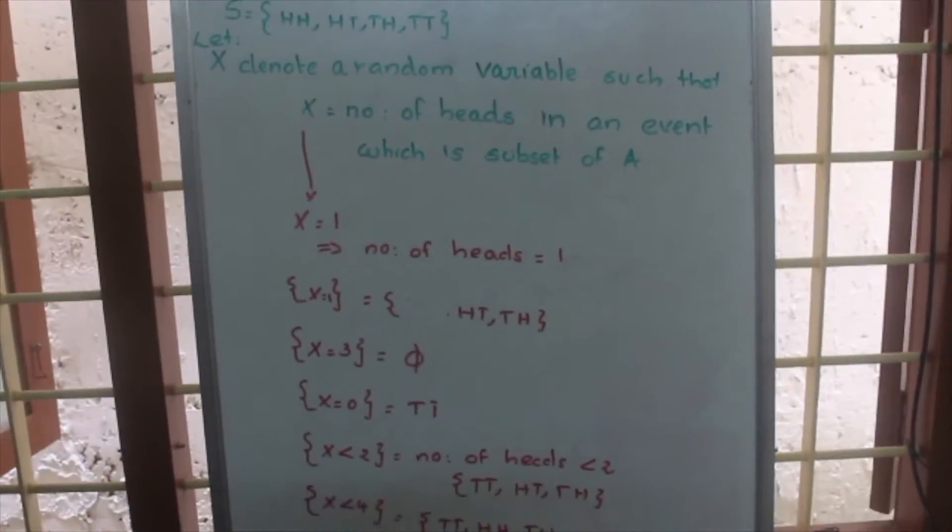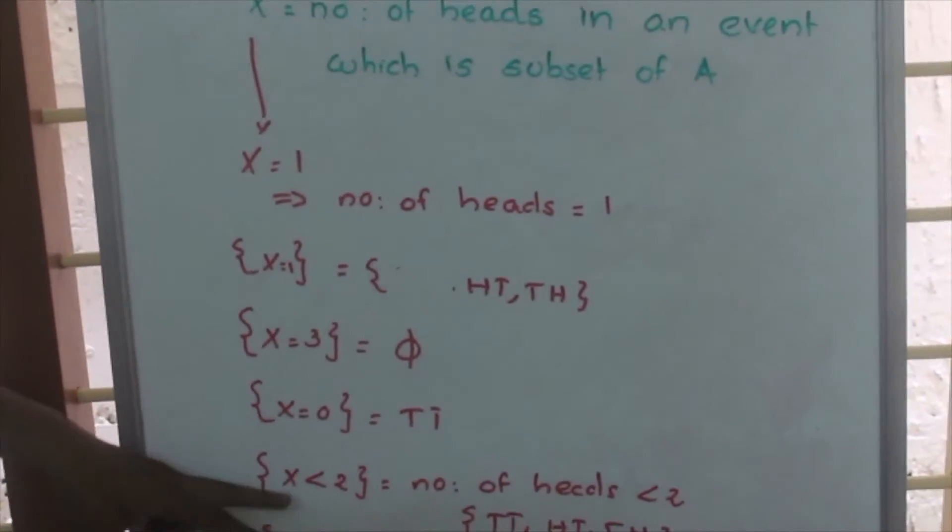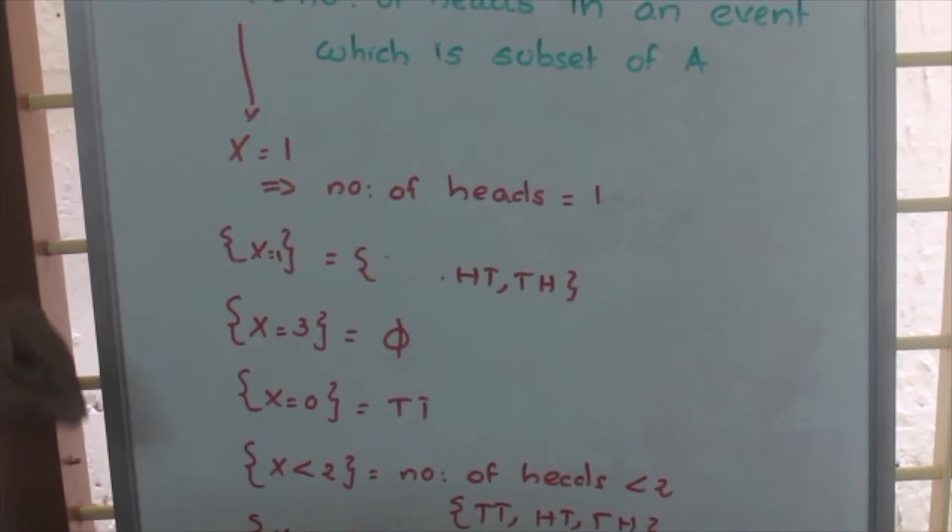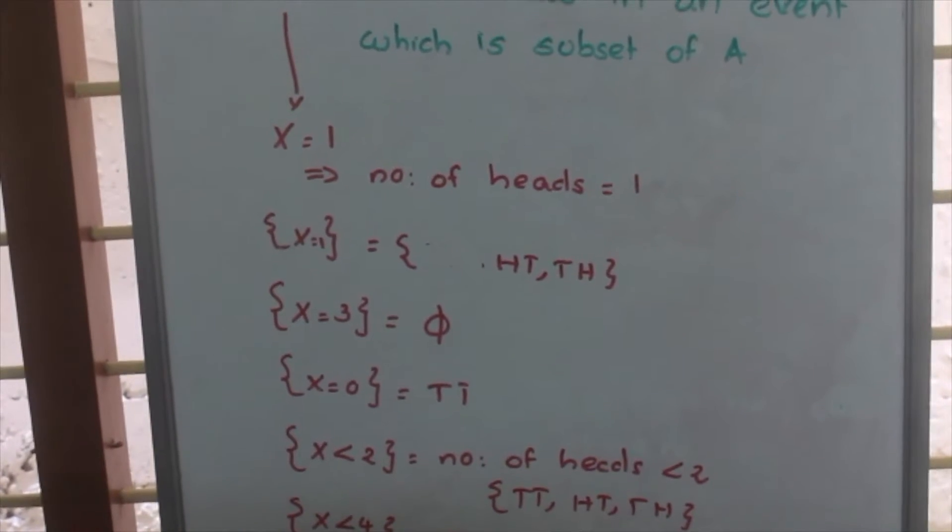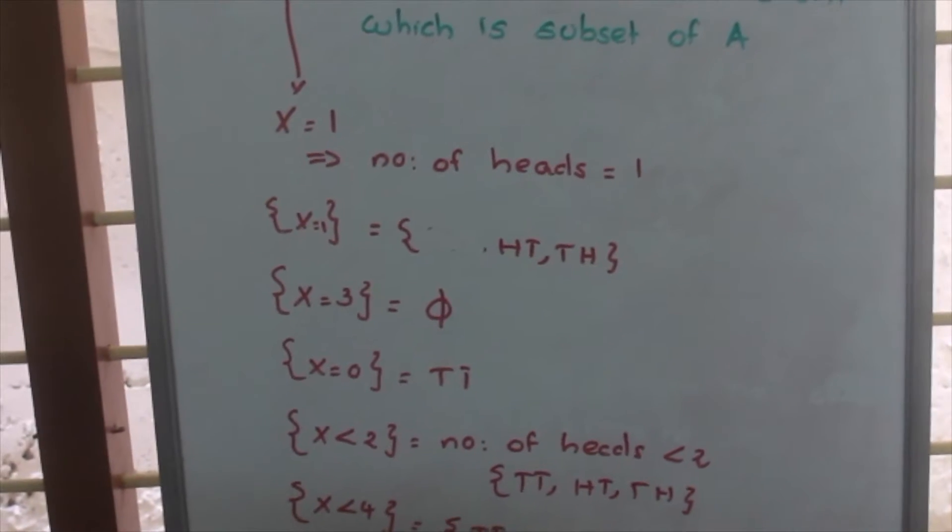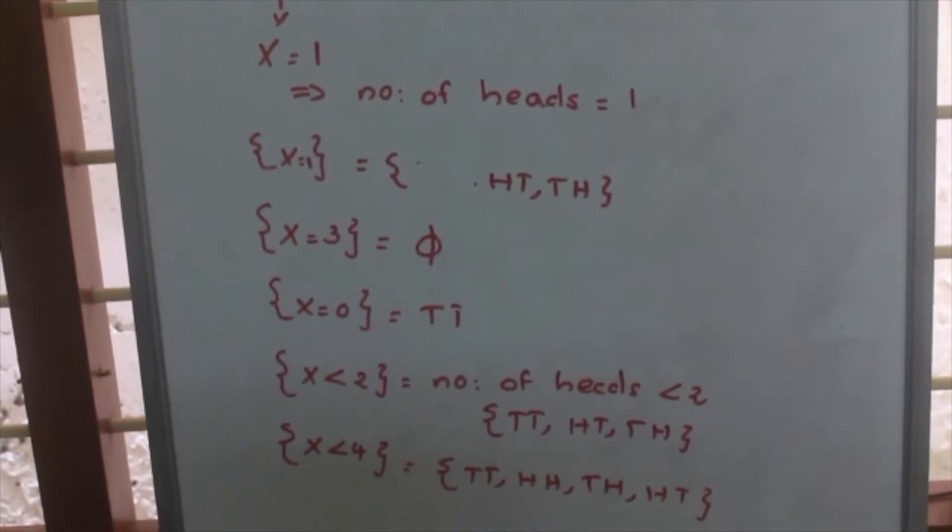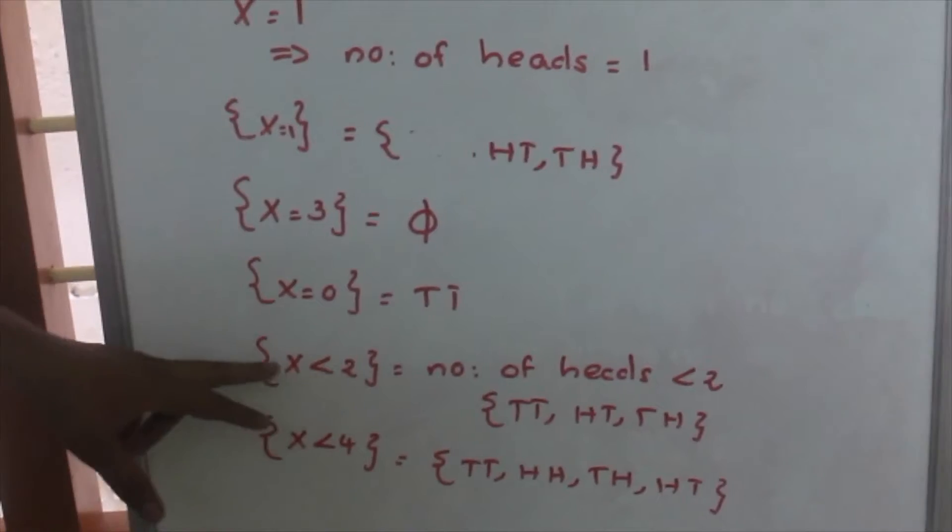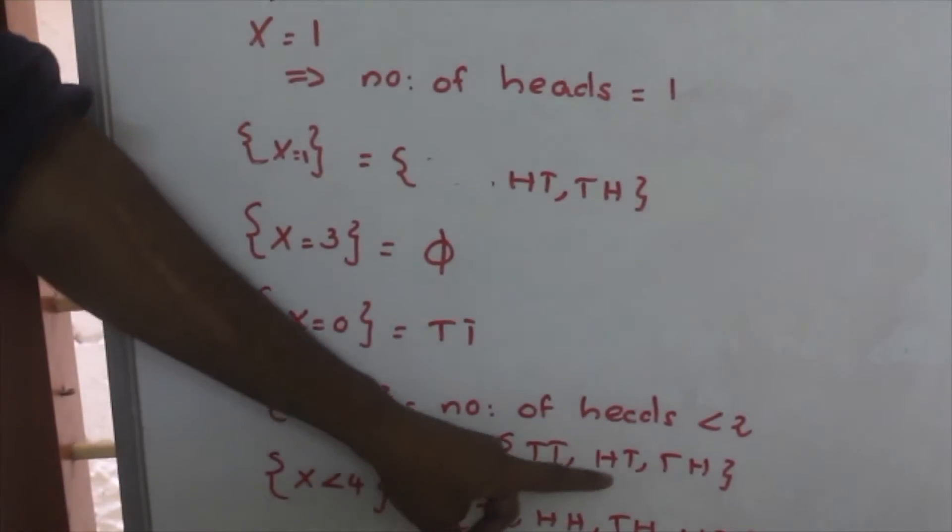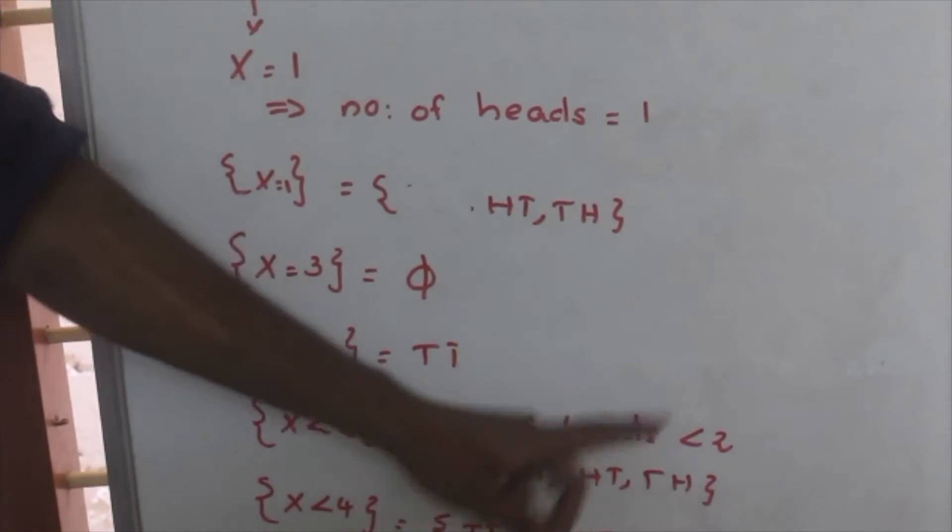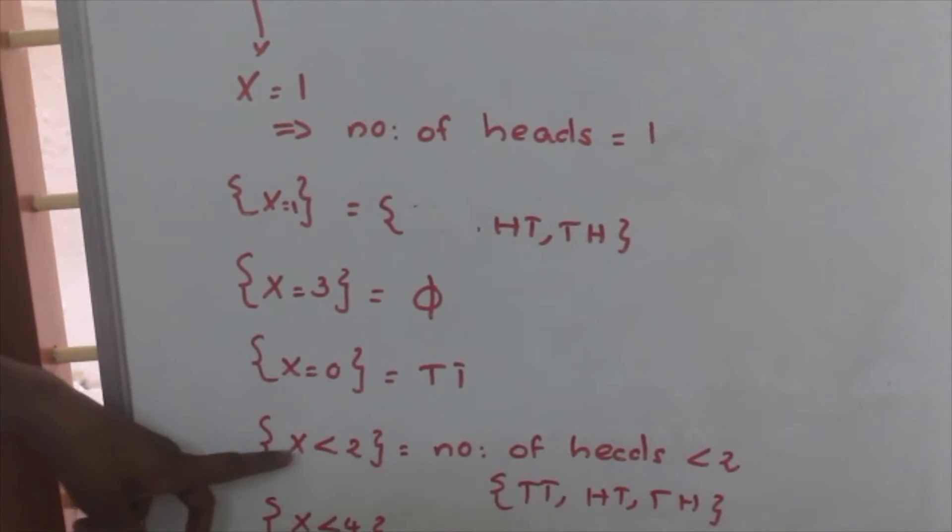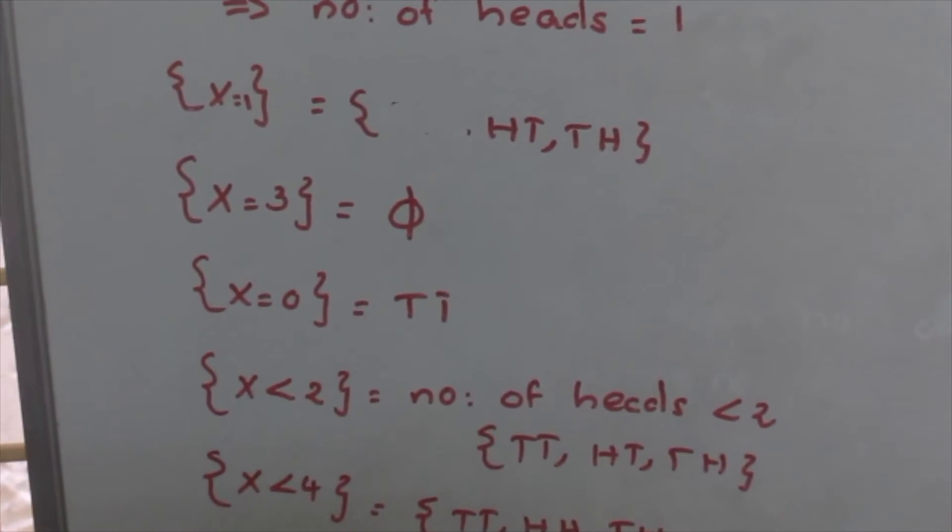X is less than 2. The meaning of this is the number of heads in an event is less than 2. All those outcomes which are having number of heads less than 2 comes under this X less than 2. Those are TT, HT and TH. So this set can in another way be represented as the set where random variable is less than 2.